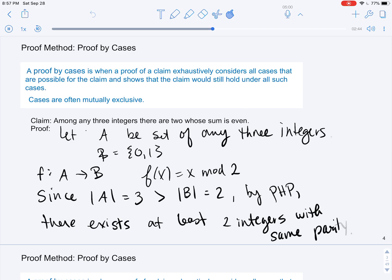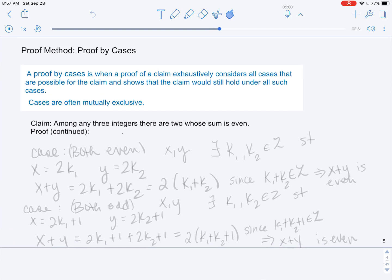Okay, so now we need to show how that's sufficient to show our claim, and we have to break it down into cases now. So the two cases that we need to worry about: the first case is if both integers are even.